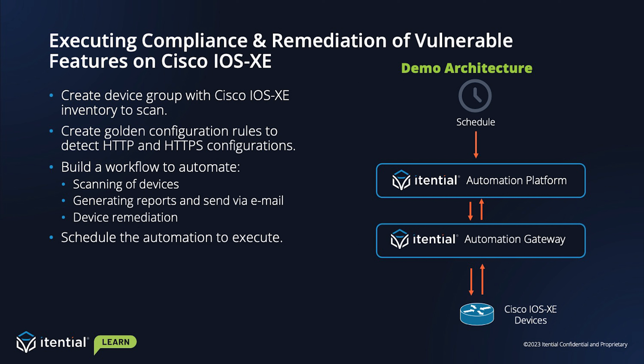First step on the automation will be to create a device group with Cisco IOS 6E devices from the inventory. Second, we're going to create a golden configuration policy to detect HTTP and HTTPS configurations and disallow them. Third, we're going to build a workflow that will be responsible for scanning the devices, executing the golden config policy, generating an HTML report that will be visualized within the automation platform and also sent as an email, and also perform remediation activities. Lastly, we're going to schedule an automation to be executed from Operations Manager on a daily basis.